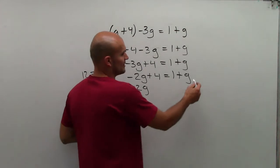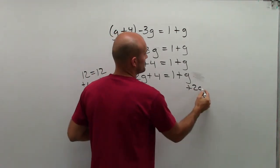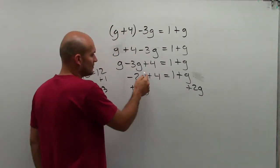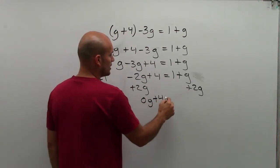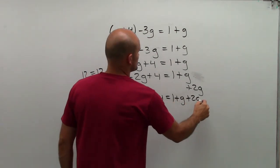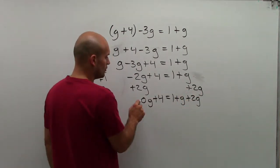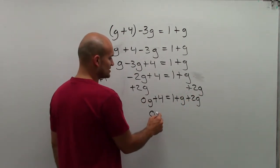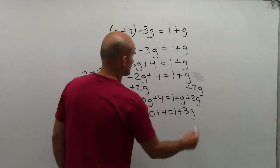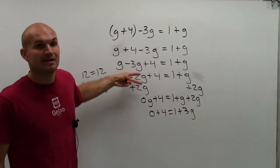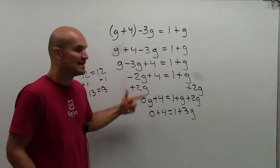Therefore, now this goes to 0g plus 4 equals 1 plus g plus 2g. Notice these are like terms. I can combine them. 0 times g is just 0 plus 4 equals 1 plus 3g. Notice that whenever I did the opposite operation, I got it to 0. And what I did was I eliminated the g on the left side.